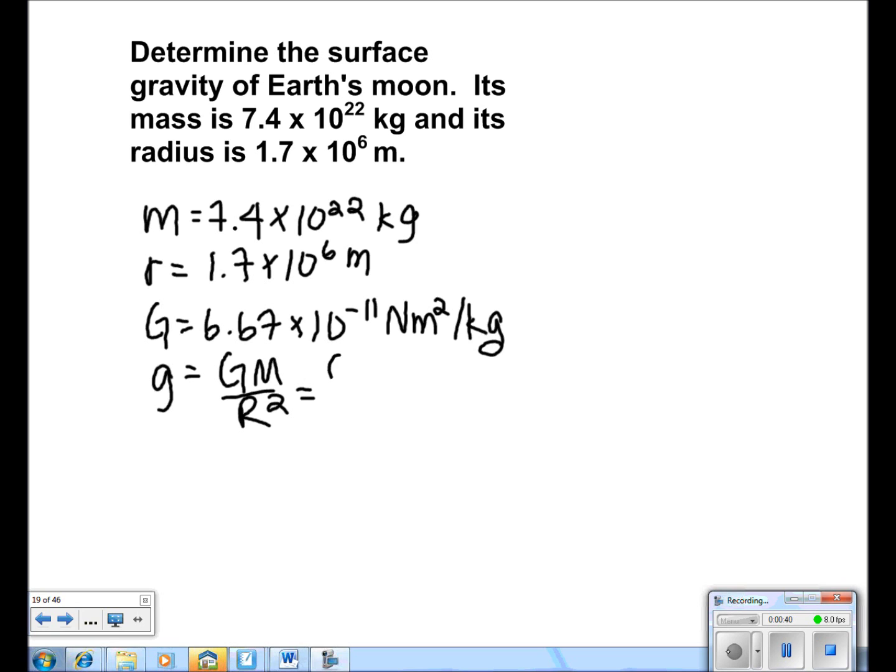We plug in the numbers: 6.67 times 10 to the negative 11 for G, 7.4 times 10 to the 22 for M, all over 1.7 times 10 to the 6 for r squared.